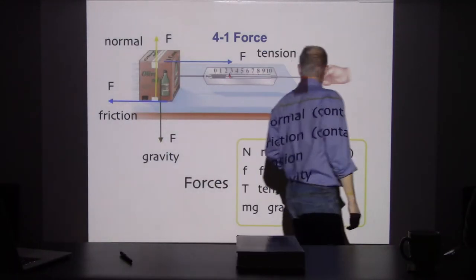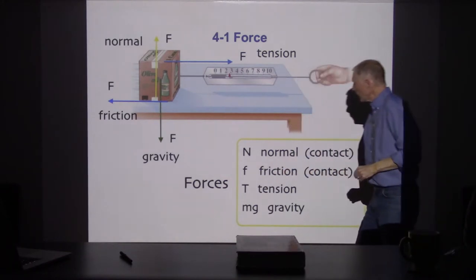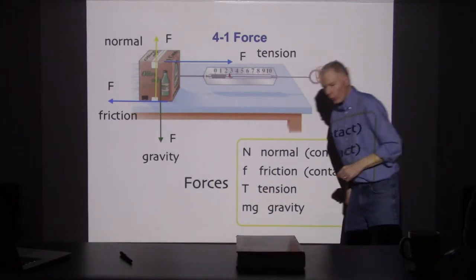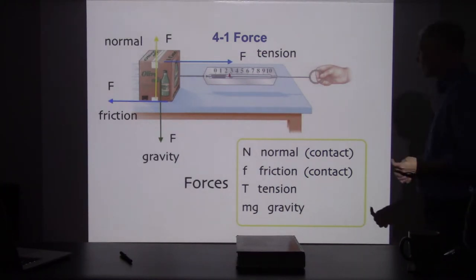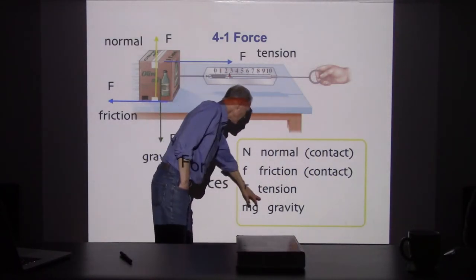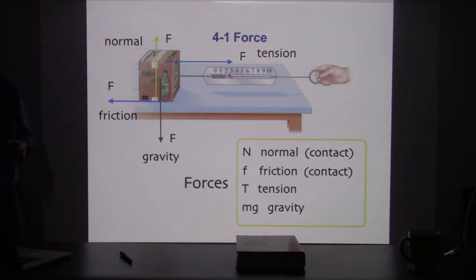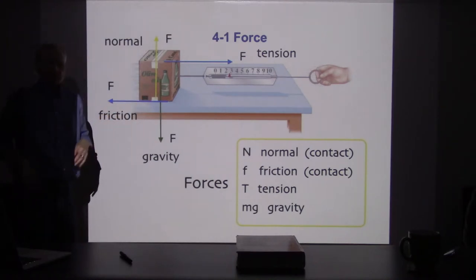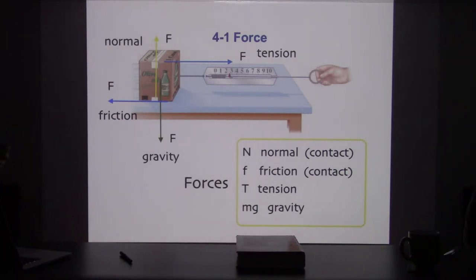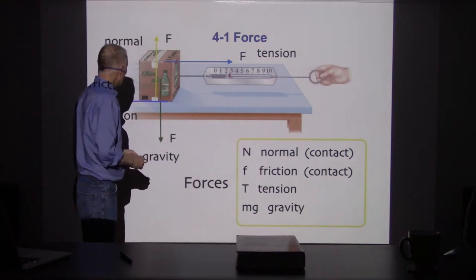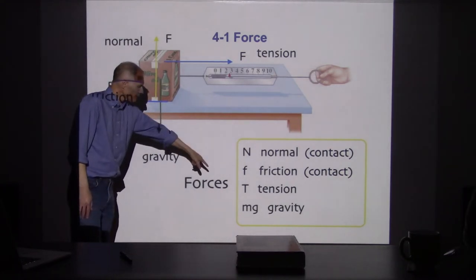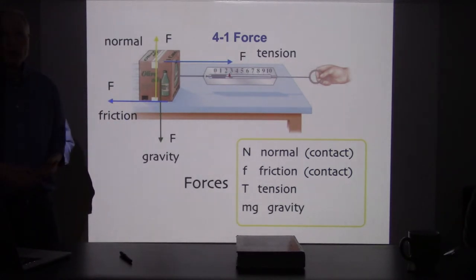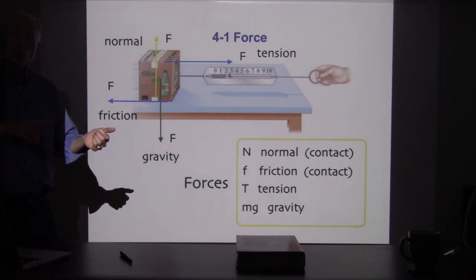Let's give all these forces a name. The gravitational force is going to be given by the formula mg — gravitational force depends on the gravitational field, which is 9.80 m/s² near the surface of the Earth, multiplied by the mass. So mg is my designation for gravitational force. As we move through chapters four and five, whenever there's a gravitational force I'm going to write mg, not F.